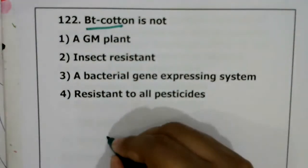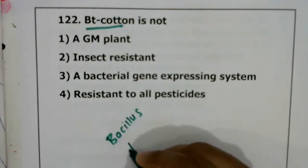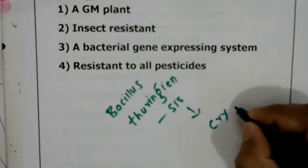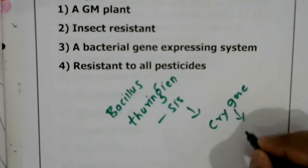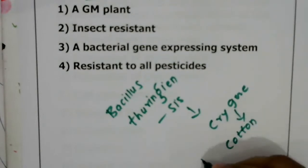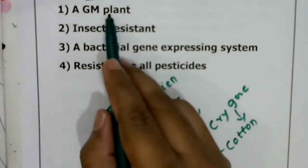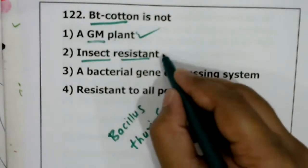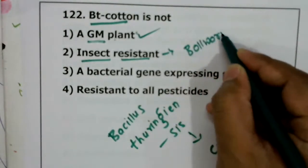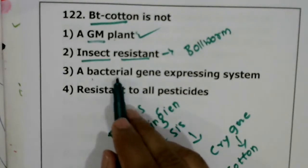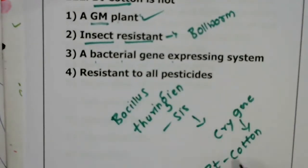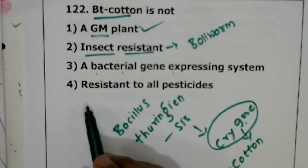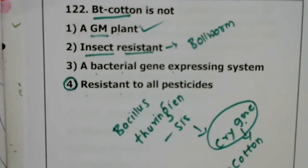Question 122: Bt cotton — bt stands for Bacillus thuringiensis. From this bacterium, the cry gene (crystalline/bt gene) is isolated and inserted into cotton, making Bt cotton — a genetically modified plant. It is insect resistant (specifically to bollworm). It is a bacterial gene expression system. However, the statement 'resistant to all pesticides' is incorrect. So question 122, the wrong statement is the fourth option.